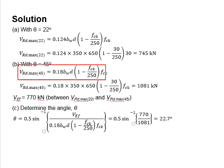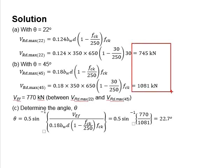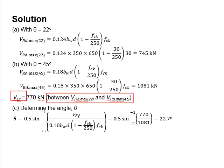With that, you will proceed with checking VRd maximum at 45 degrees, which is found to be 1081 kN. Based on the result here, you know that VEF is falling in between 22 to 45 degrees.